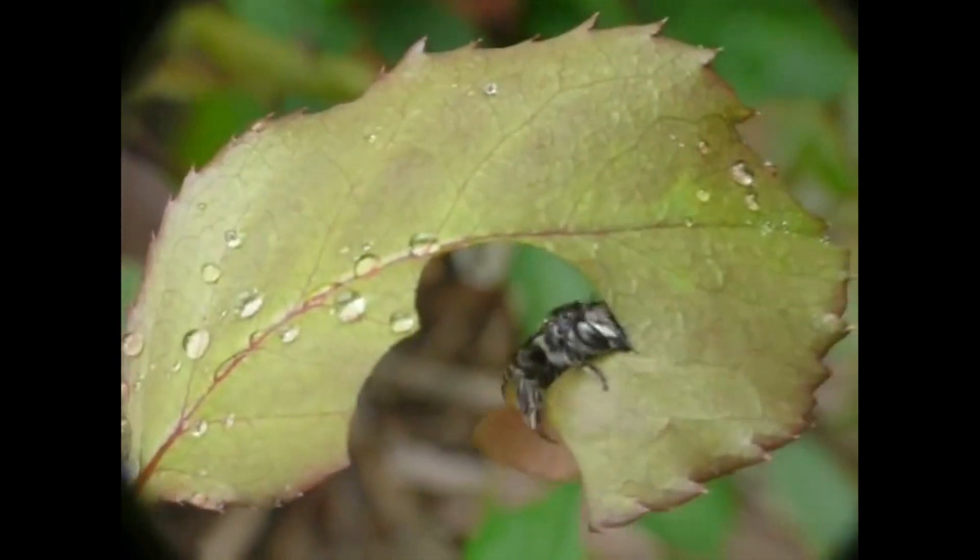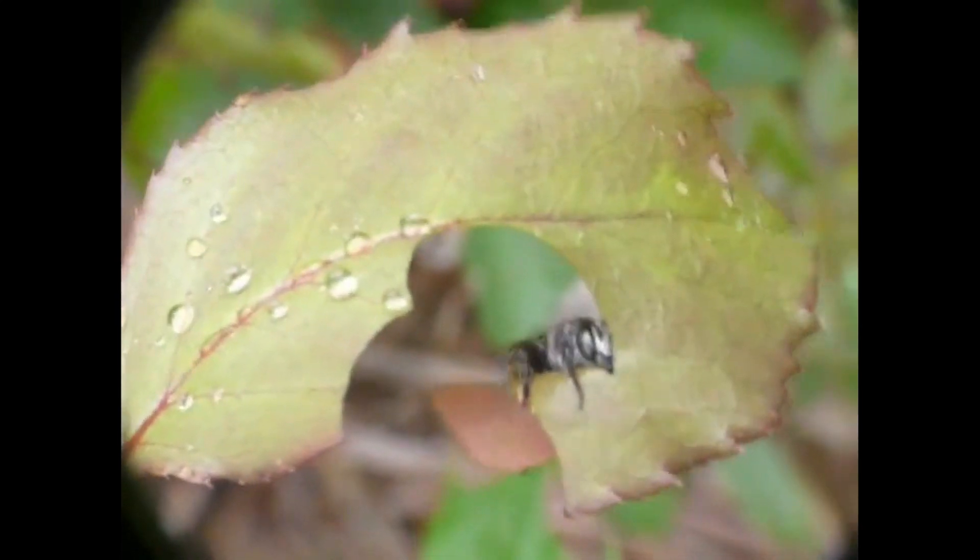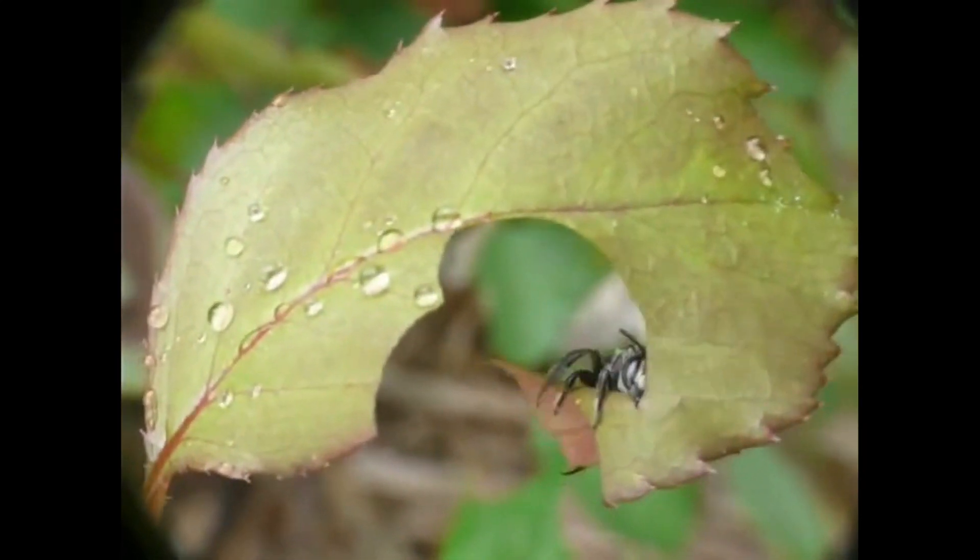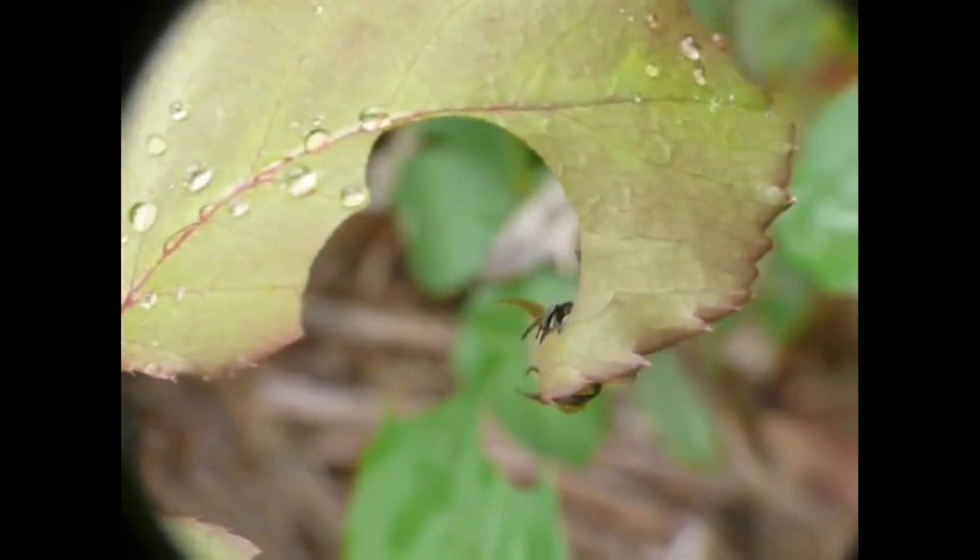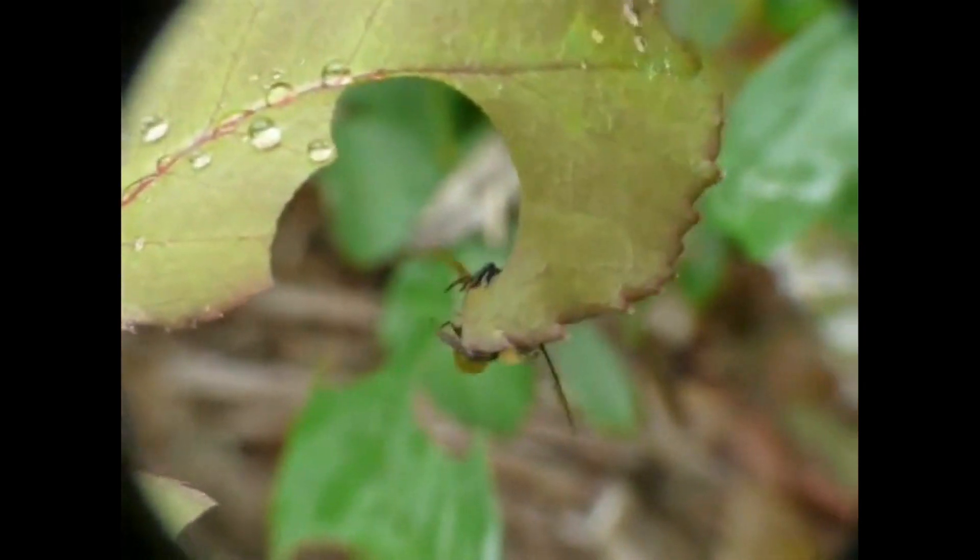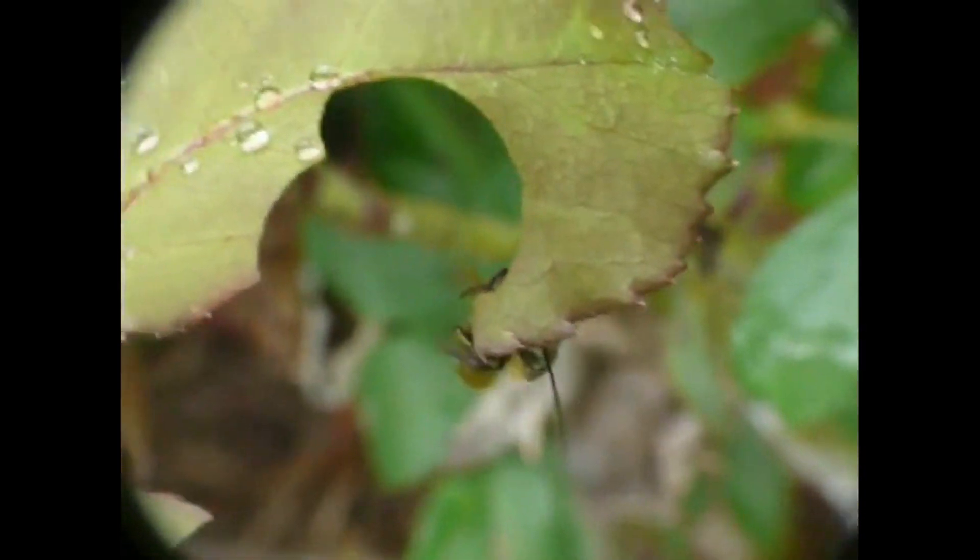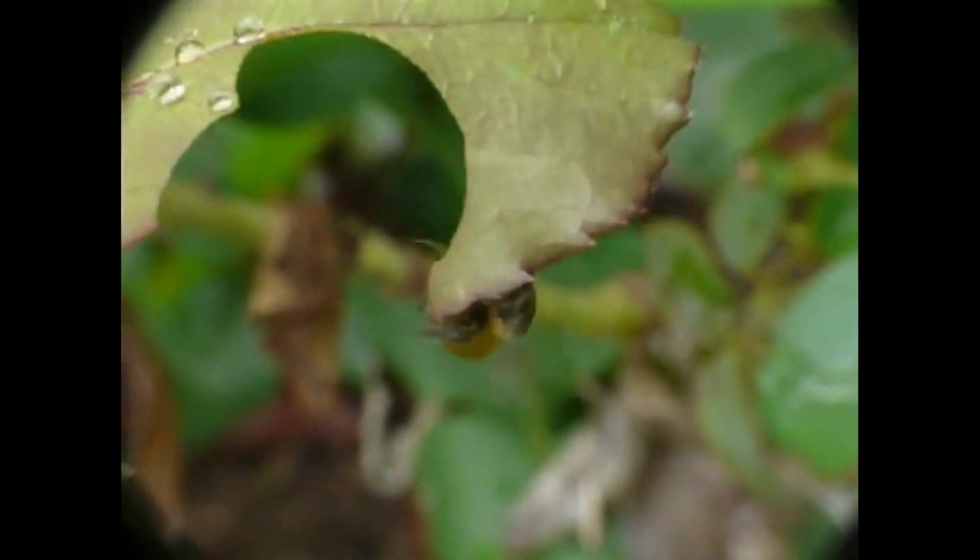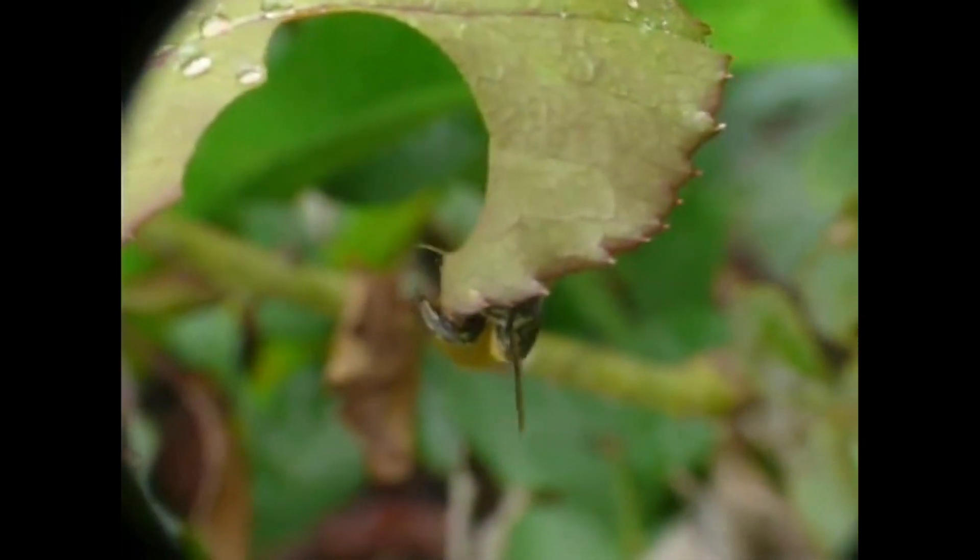Leafcutter bees are a family of solitary bees. Because they don't have hives or queens to protect, solitary bees are often much more docile than the typical honeybee and are a lot less likely to sting. Even though these bees don't produce honey, they are important and efficient pollinators and are great at preserving biodiversity.